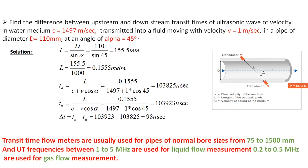A numerical example: for a water medium with ultrasonic velocity 1497 m/s, fluid velocity 1 m/s, pipe diameter D = 110 mm, and injection angle alpha = 45 degrees, L = D / sin(alpha) = 155.5 mm. Calculating the upstream and downstream transmit times in nanoseconds and subtracting gives delta T = Tu - Td = 98 nanoseconds.